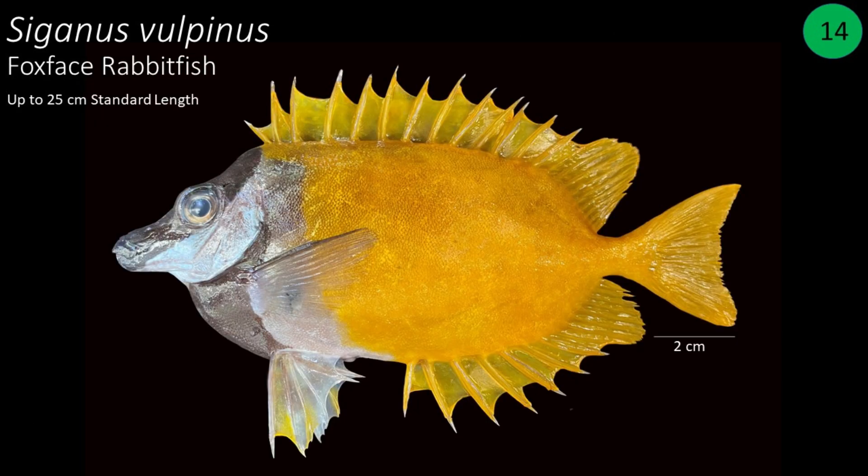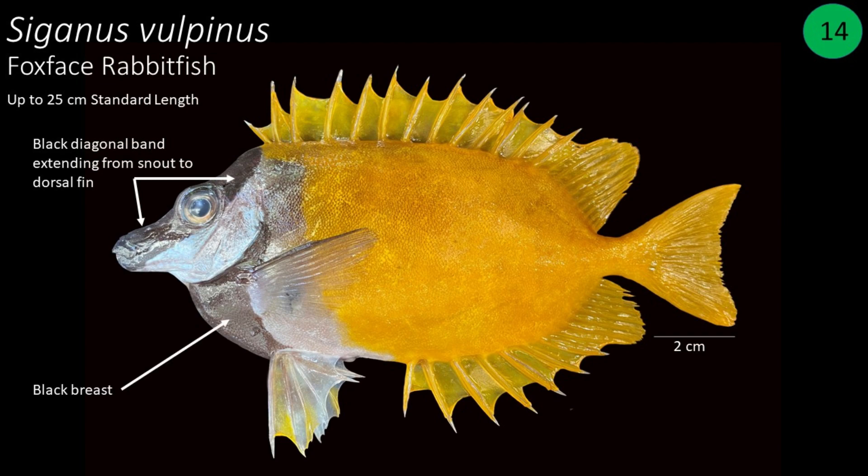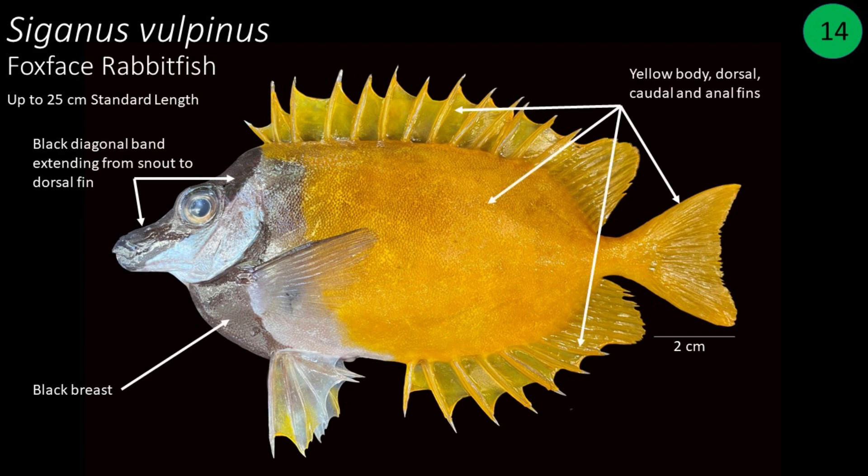Number 14: Siganus vulpinus, also called fox-face rabbitfish. It can reach up to 25 centimeters in standard length. The head is white with a black diagonal band extending from the snout to the dorsal fin, and the breast is black with yellow on other parts of the body.